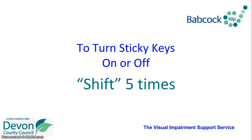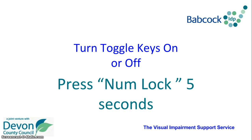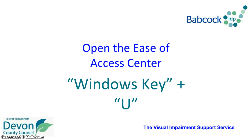To turn Sticky Keys on or off, you press the Shift key five times. To turn your Toggle Keys on and off, you press your Number Lock key for 5 seconds. To open the Ease of Access Centre, you press the Windows key and U.